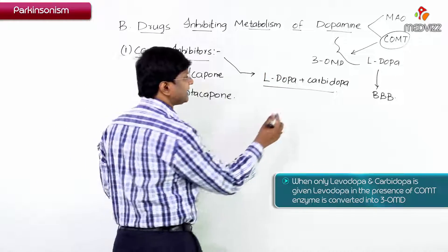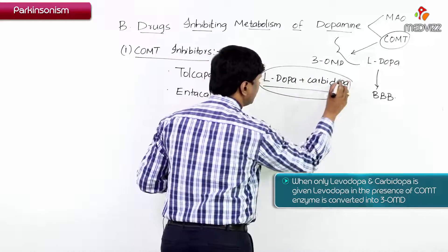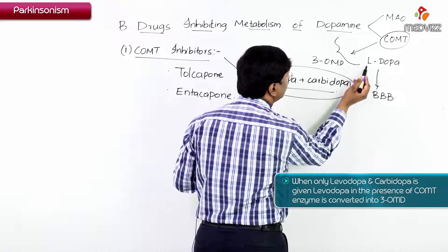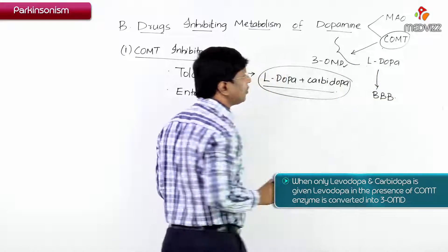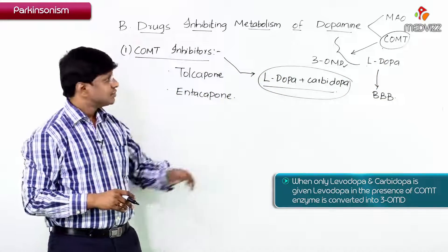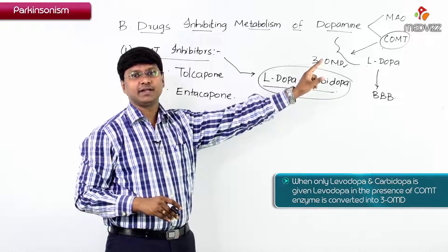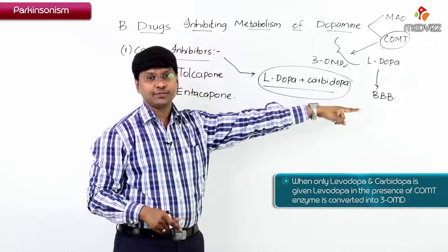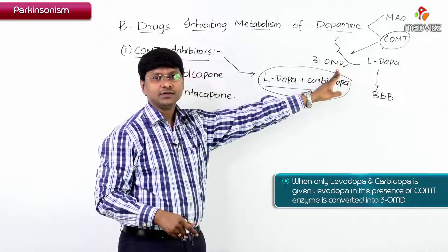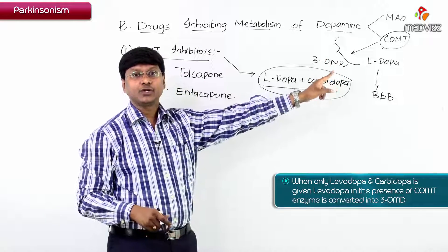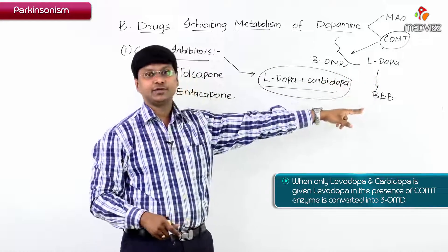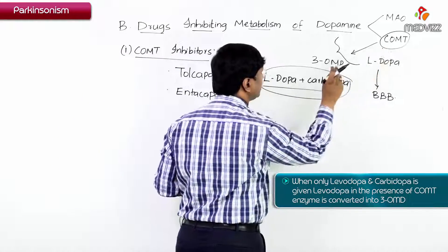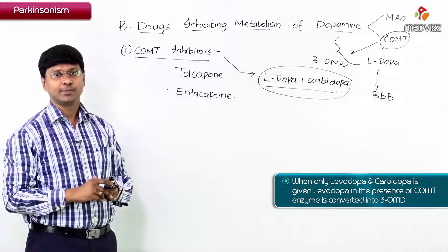When giving only levodopa plus carbidopa, the levodopa in the presence of COMT enzyme is converted into 3-O-methyldopa. This 3-O-methyldopa competes with levodopa itself for entry into the brain. By using tolcapone or entacapone, the COMT enzyme is inhibited and there is no formation of 3-O-methyldopa.